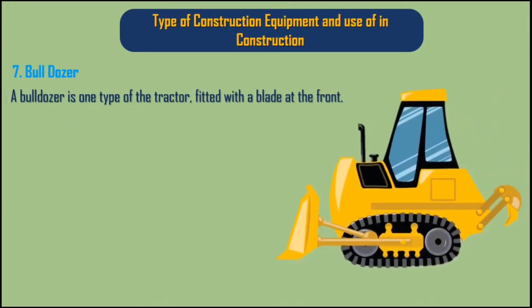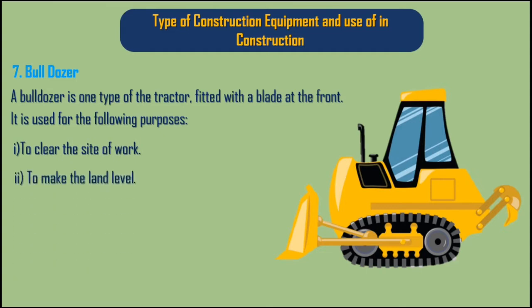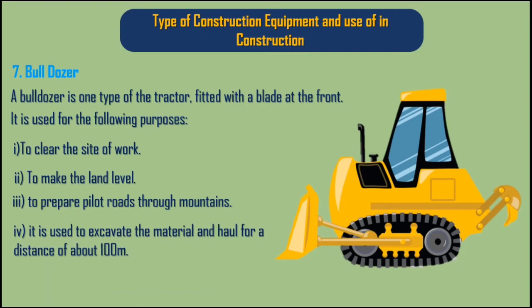7. Bulldozer. A bulldozer is one type of tractor fitted with a blade at the front. It is used for the following purposes: 1. To clear the site of work. 2. To make the land level. 3. To prepare pilot roads through mountains. 4. It is used to excavate material and haul for a distance of about 100 meters.